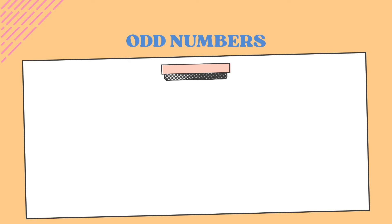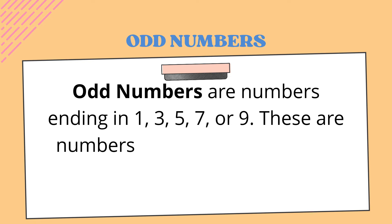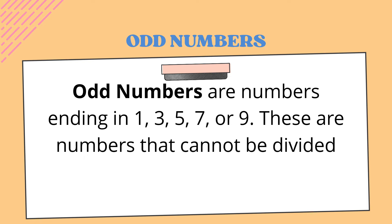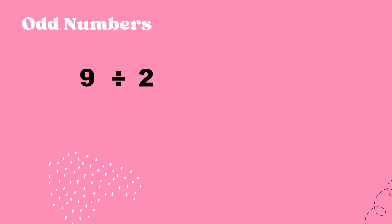Next, we're going to study about odd numbers. Odd numbers are numbers ending in one, three, five, seven, or nine. These are numbers that cannot be divided exactly by two and always give a remainder of one. For example, nine: nine divided by two is equal to four remainder one, so nine is an odd number.